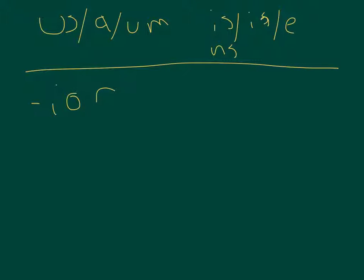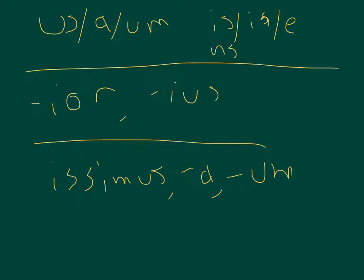Comparative is i-or for your masculine and feminine, and i-us for your neuter. And then superlative is issimus, a, um. And you want to watch out for this issy as your identifying mark of the superlative.